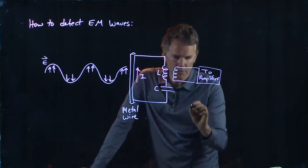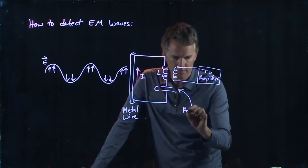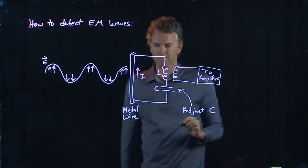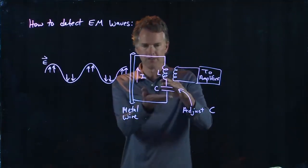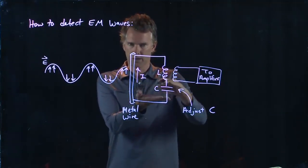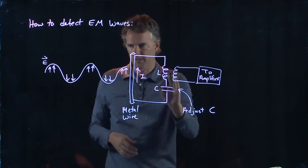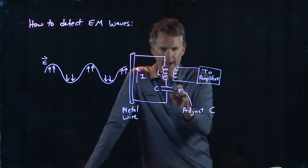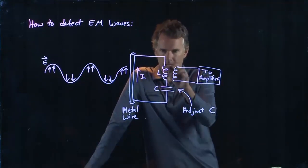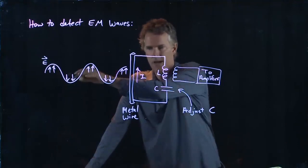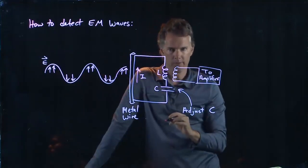And now we're going to adjust the capacitor. How do you adjust the capacitor? You can move the plates relative to one another, and that will adjust the value of the capacitance. And if I do that, I can find a resonant frequency of this circuit that just matches the resonant frequency of the wave coming in.